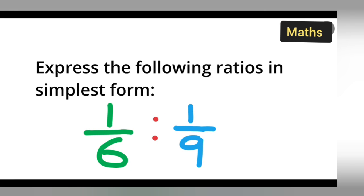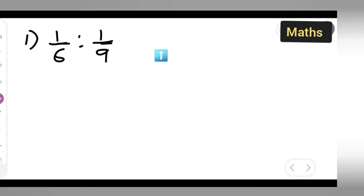Welcome to today's class of mathematics. Today's question is express the following ratio in simplest form: 1 upon 6 is to 1 upon 9. So we have to express this in the simplest form.